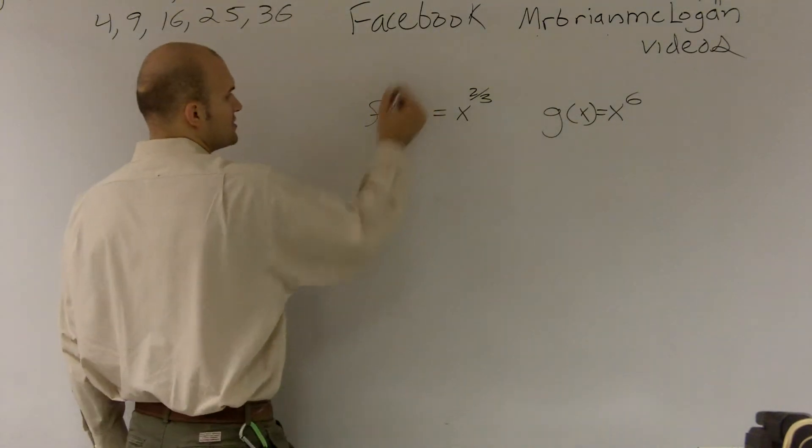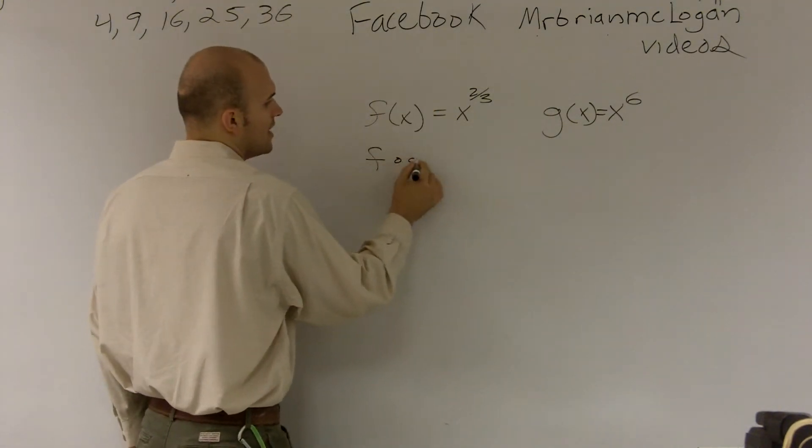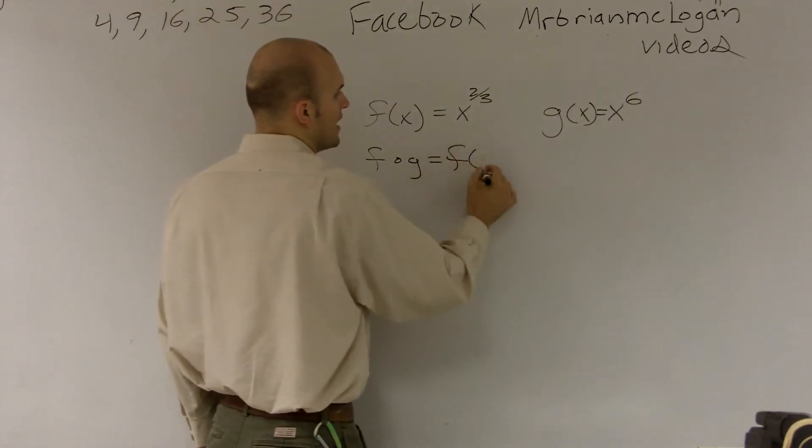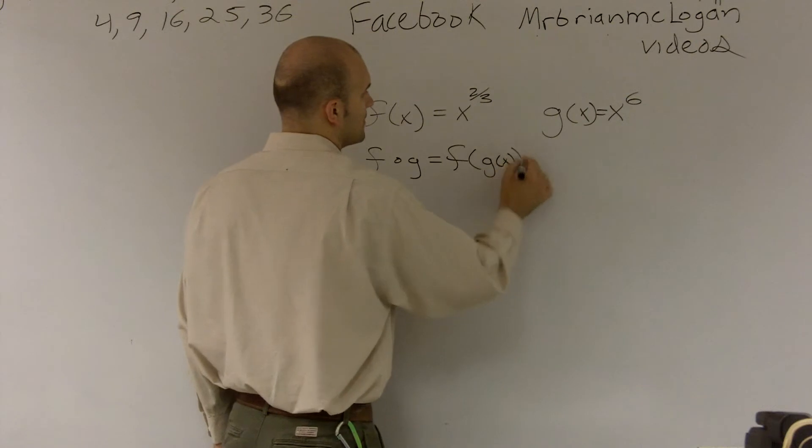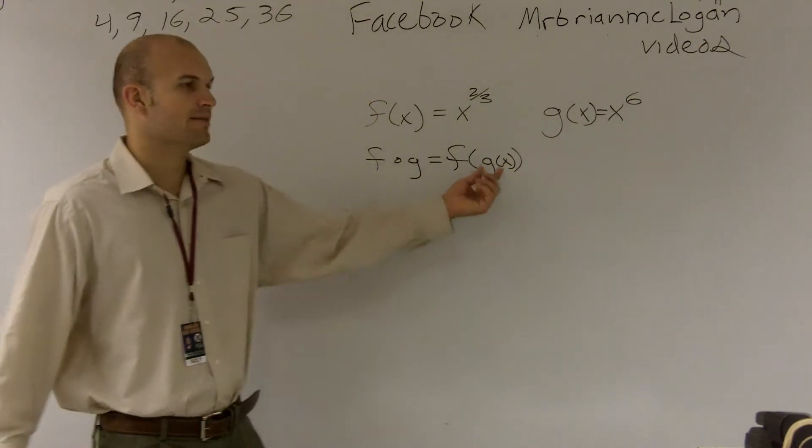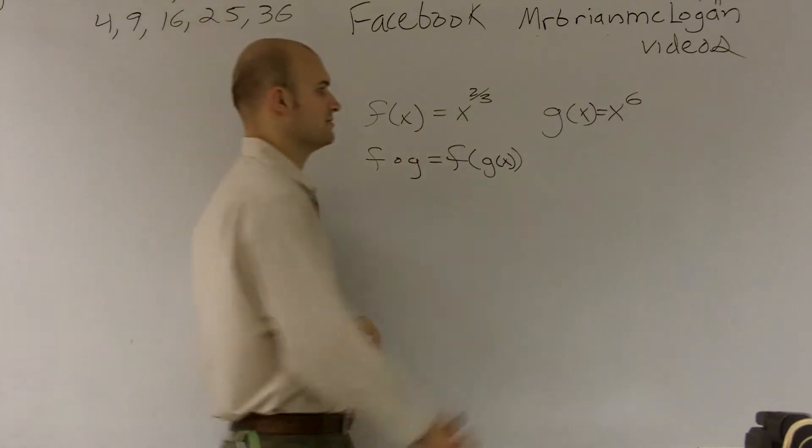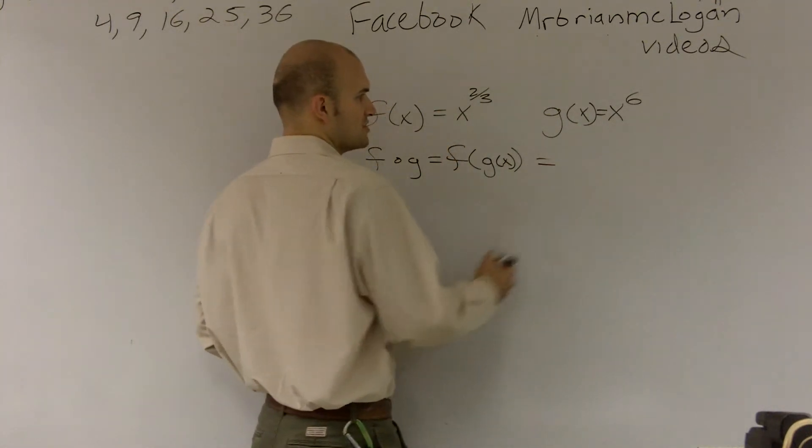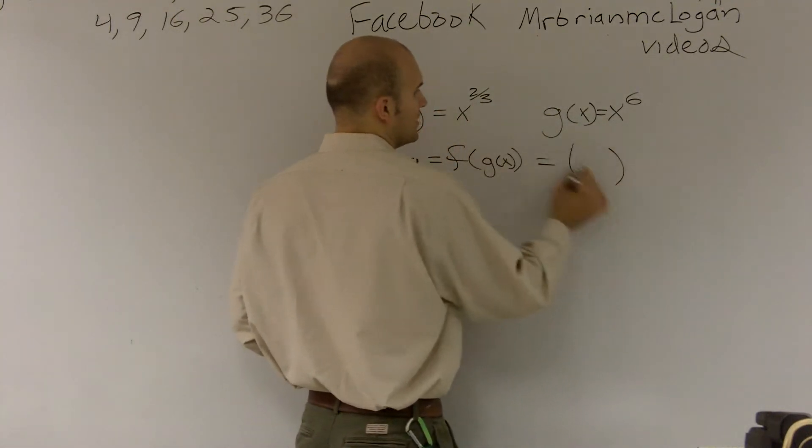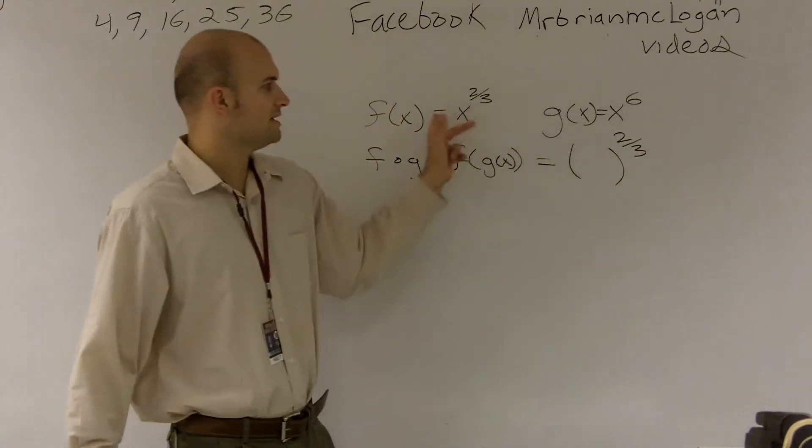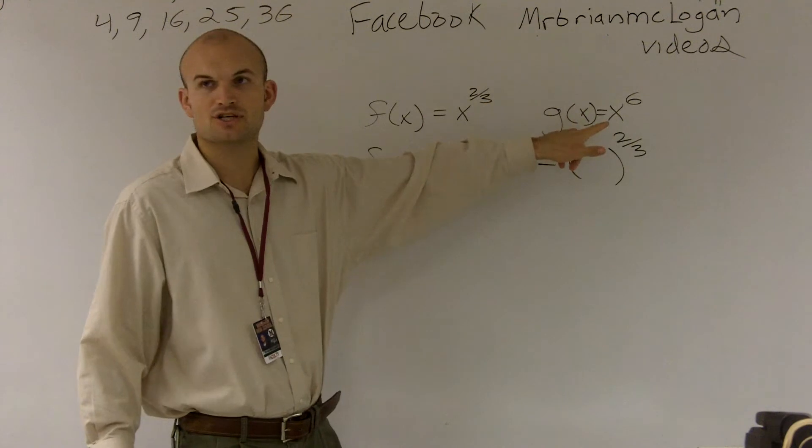So our first composition that we're going to try to do is f of g, which is the same thing as really saying f of g of x. So what I'm going to do is I'm going to plug in my g of x function, which is x to the 6, into my other function, my f of x function. So my f of x function is really x to the two-thirds, but instead of plugging in x in there, I'm going to plug in what g of x is.